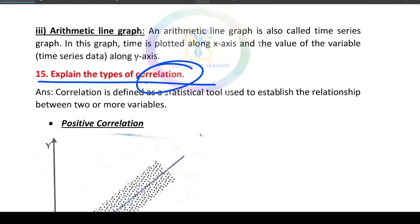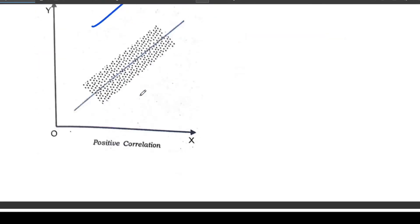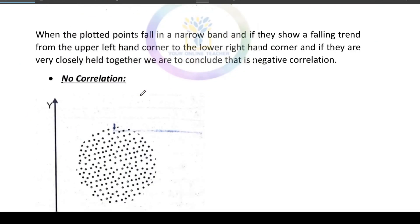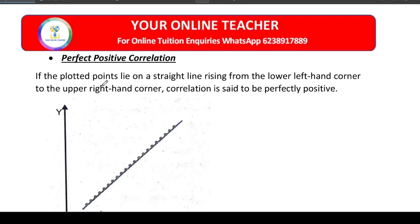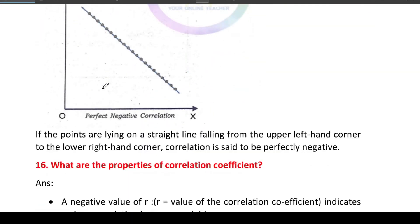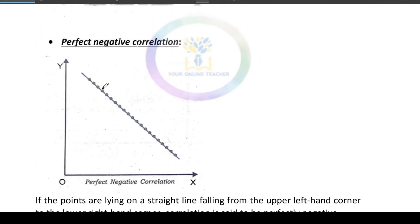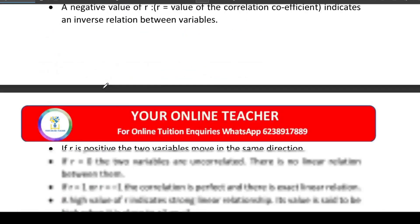The important title is correlation type. If you look at the graph, you will expect positive correlation, then negative correlation, then no correlation, perfect positive correlation, and then negative correlation.